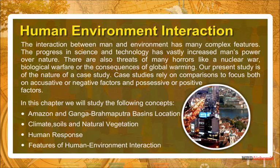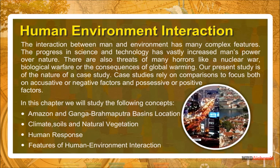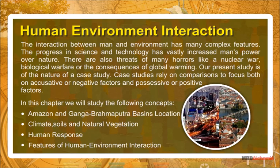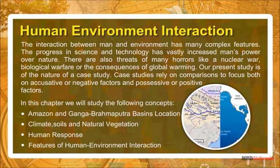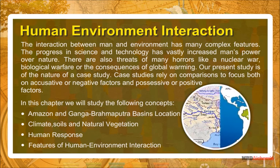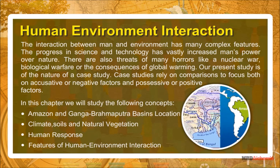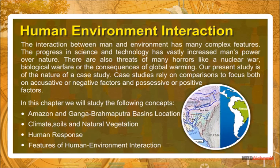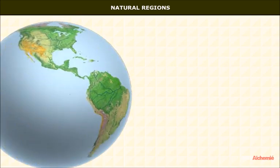In this chapter we will study the following concepts: Amazon and Ganga-Brahmaputra basins — location, climate, soils and natural vegetation, human response, features of human-environment interaction, and natural regions.